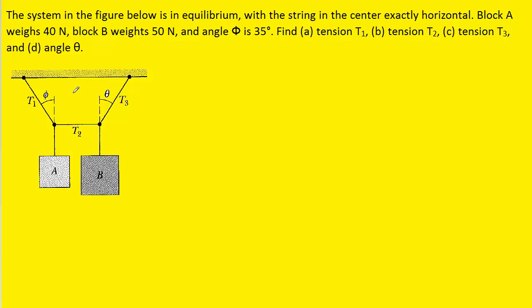In order to find the tension T1, what we're going to do is examine this junction right here where three strings come together, and we're going to draw the forces that are acting at that junction. We can see that one of the forces acting at the junction is the tension T1, which would be pointing upward and to the left. So we can draw a force pointing up and to the left, and we'll label it T1.